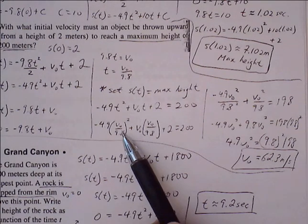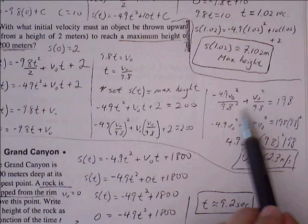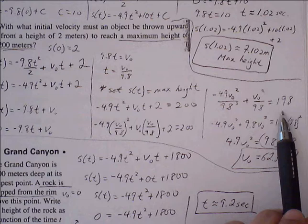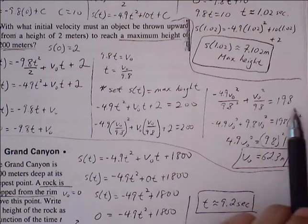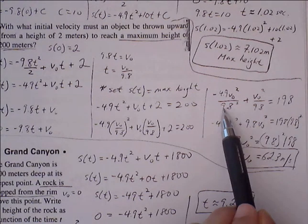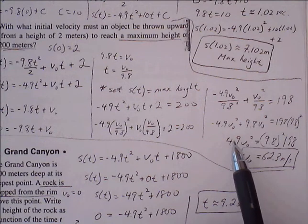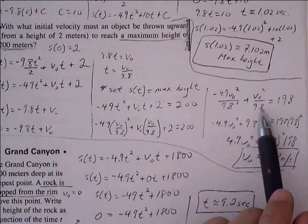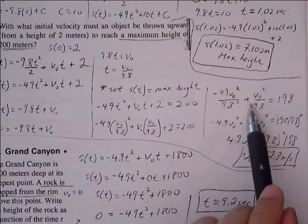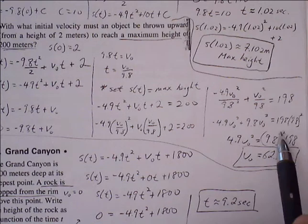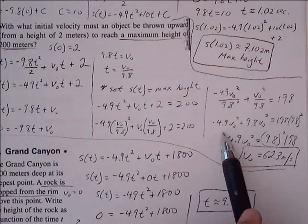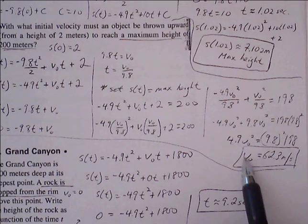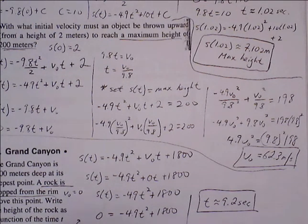If we square this, we get v₀² over 9.8². These two combine to be v₀² over 9.8. If I multiply everything through by 9.8², I can get rid of the denominator here. Sorry, multiply everything through by 9.8². We'll cancel this out. I'm still left with 9.8 up top. This gives me 198 times 9.8². Use our calculator here. Divide both sides by 4.9, take the square root, and we get 62.3 meters per second.